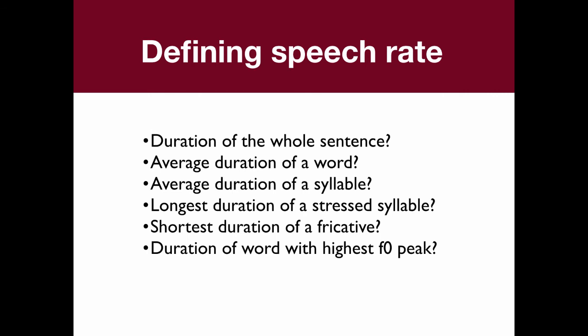It's a hard choice, and some of these options are less reasonable than others. For instance, duration of the whole sentence doesn't give you very much data — that's just one data point per sentence. Shortest duration of a fricative is a bit strange: you would find all the fricatives, then find the one with the shortest duration, and use that as your representative speech rate. It's hard to see how that would make sense, but it is a possible way you could define speech rate.